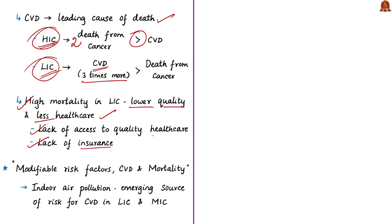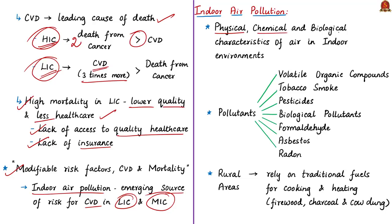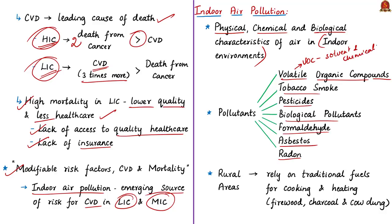Better insurance coverage and improving hospital standards can reduce CVD mortality. Another PURE study on modifiable risk factors established that indoor air pollution is an emerging risk for CVD in low- and middle-income countries. Indoor air pollution refers to physical, chemical, and biological characteristics of air within a home, building, or institution. Pollutants include volatile organic compounds (VOCs), tobacco smoke, pesticides, biological pollutants, formaldehyde, asbestos, and radon.